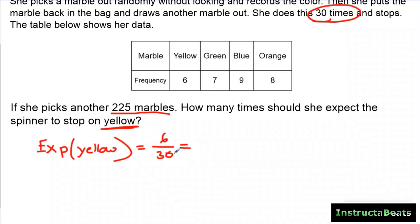So the relative frequency that she landed on yellow is 0.2. So we can say that the experimental probability of her landing on yellow would be 20%. So we are expecting now, no matter how many more times she's done it, even if she draws another 1,000, 20% of those would be yellow. That's what our data right now is telling us. So if we pick another 225, how many times should she expect the spinner to stop on yellow? So we think that it should be about 20%.